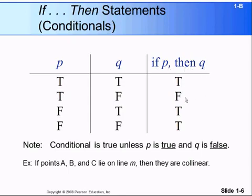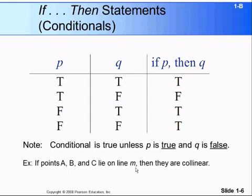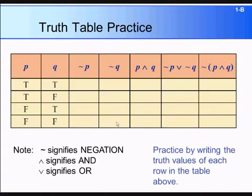So 'if P then Q' is false only when the hypothesis is true and the conclusion is false. Let's look at an example: 'If points A, B, and C lie on line M, then they are collinear.' The hypothesis is 'points A, B, and C lie on line M' and the conclusion is 'they are collinear.' We know this is true, so it is a true conditional statement. Now let's practice a truth table with the given statements: not P, not Q, P and Q, not P or not Q, and the negation of P and Q.